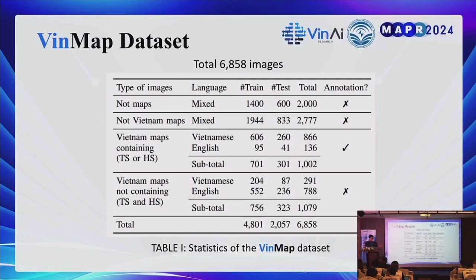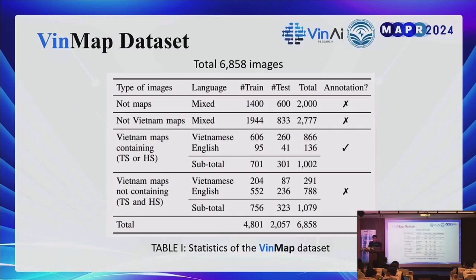Here is a brief analysis of the dataset. We split it into four parts. The first is mixed-language maps containing Vietnamese and English, with a total of 2,000 images. North Vietnam maps contain roughly 2,777 images. Vietnam maps containing Trường Sa or Hoàng Sa are split into Vietnamese and English subsets — in Vietnamese they are labeled Hoàng Sa and Trường Sa, and in English as Spratly and Paracel. Vietnam maps not containing Trường Sa and Hoàng Sa total approximately 6,858 images.